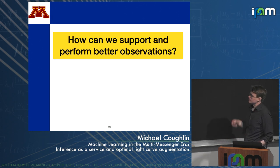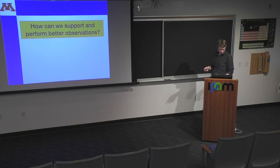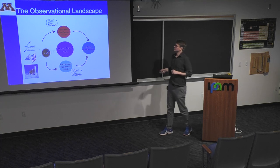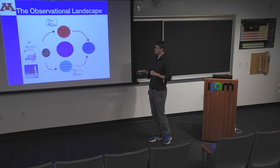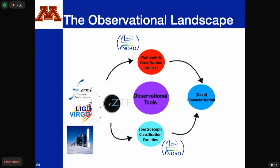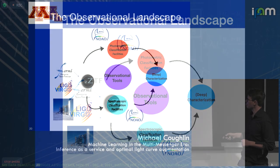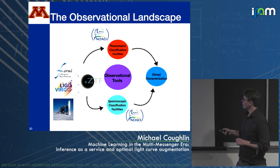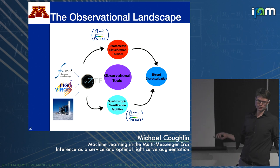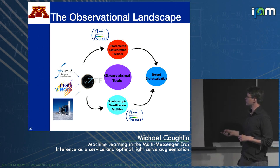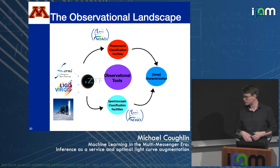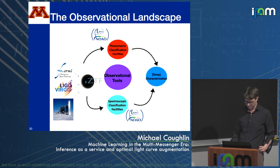The second half of the talk is about follow-up. On the left we have providers of multi-messenger alerts: IceCube, the LVK, Fermi, and many others. Then you have either photometric or spectroscopic classification facilities to classify or characterize objects, and usually a large-aperture eight-to-ten meter class telescope for deep imaging or deep spectra.